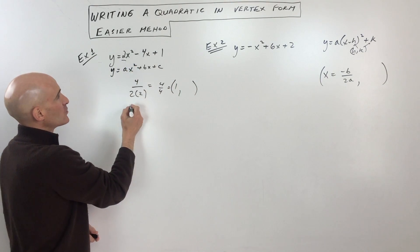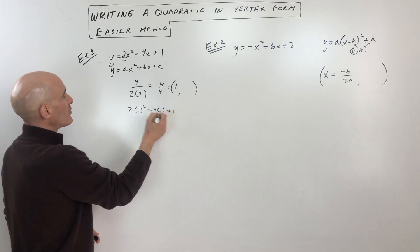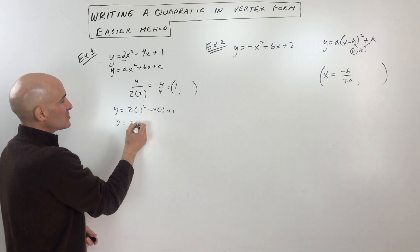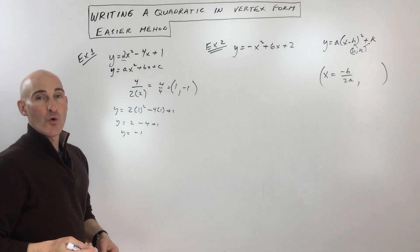Now, if we put one back in for x, we get two times one squared minus four times one plus one. And if we simplify that, we get two minus four plus one, which is negative one. So you can see that our vertex is at one negative one.